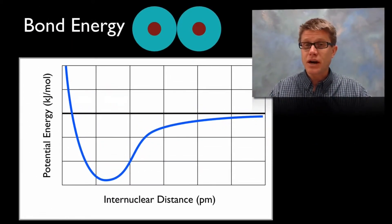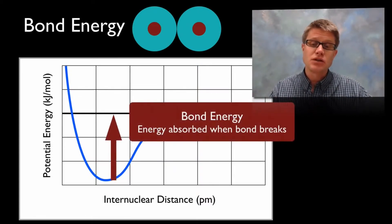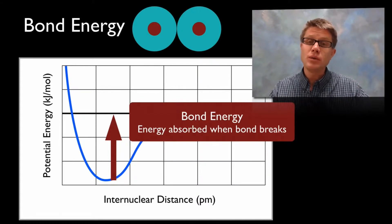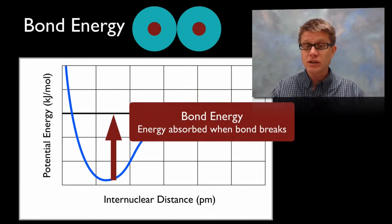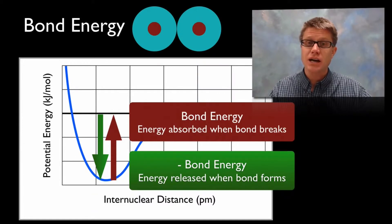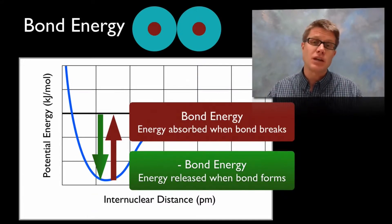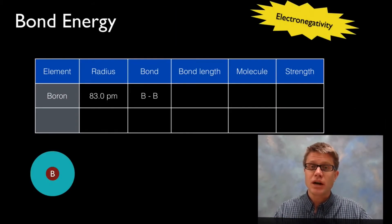So if we define what bond energy is: it's just two atoms connected together, and bond energy is the energy absorbed when we break those atoms apart. Likewise, there's going to be energy released as we bond those together, and that's going to be the negative bond energy. The amount of energy to break it apart is the same amount of energy that we get when those two atoms are attracted together.